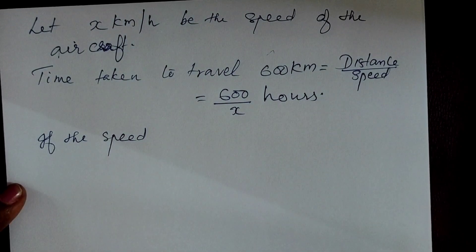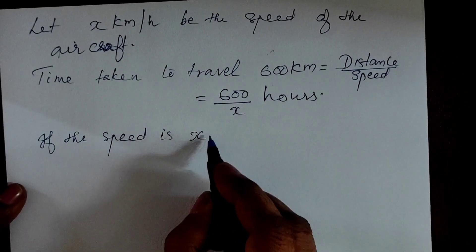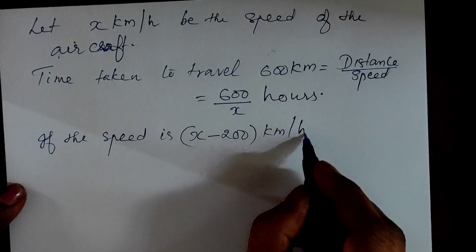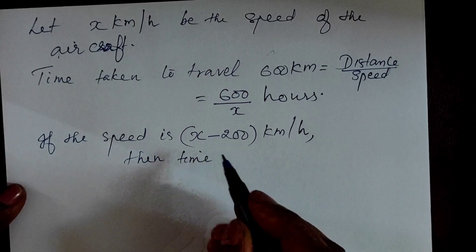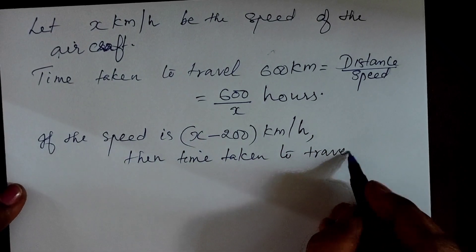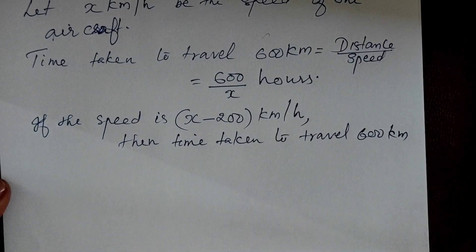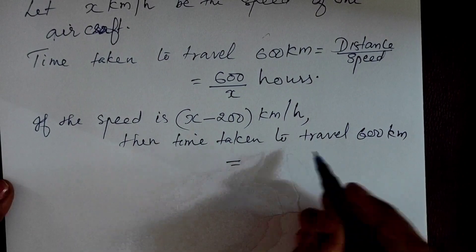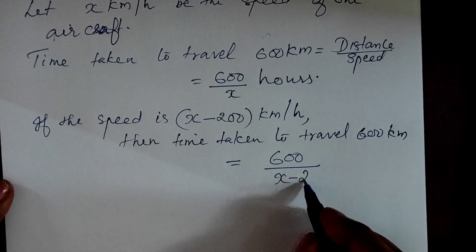Then, because the speed is reduced, the new speed is x minus 200 kilometres per hour. The distance remains the same at 600 km. So, the new time taken is 600 divided by x minus 200.